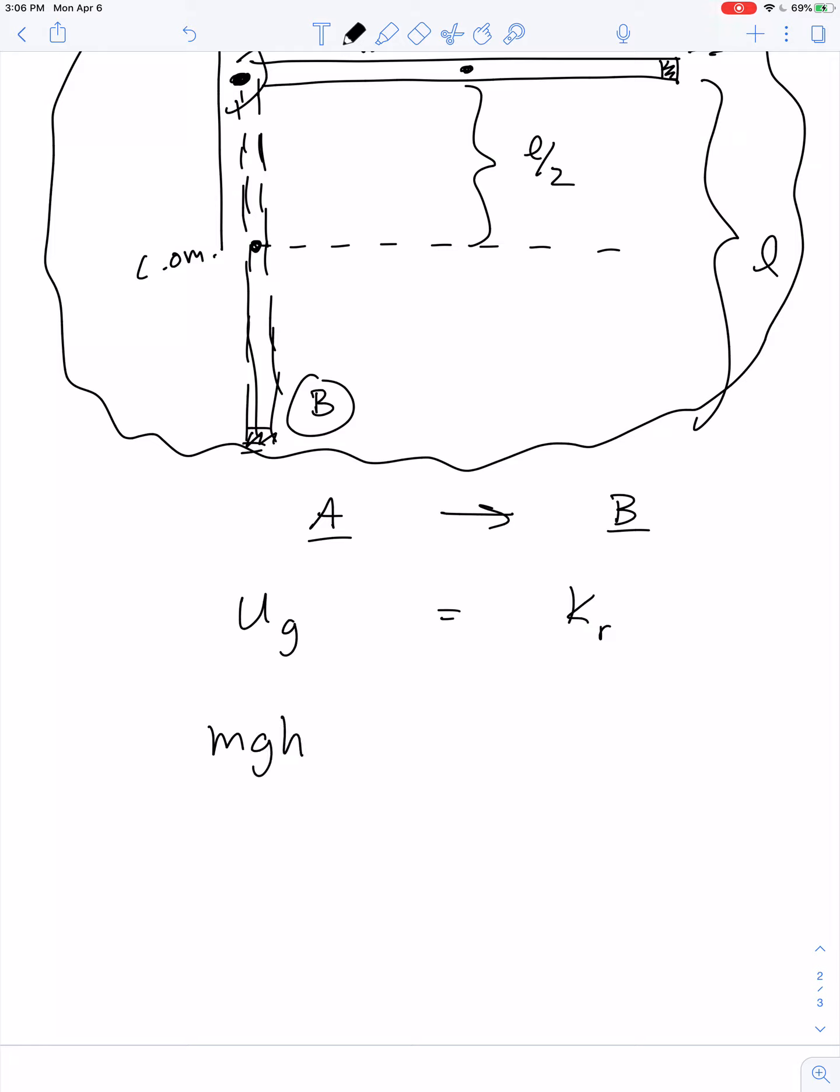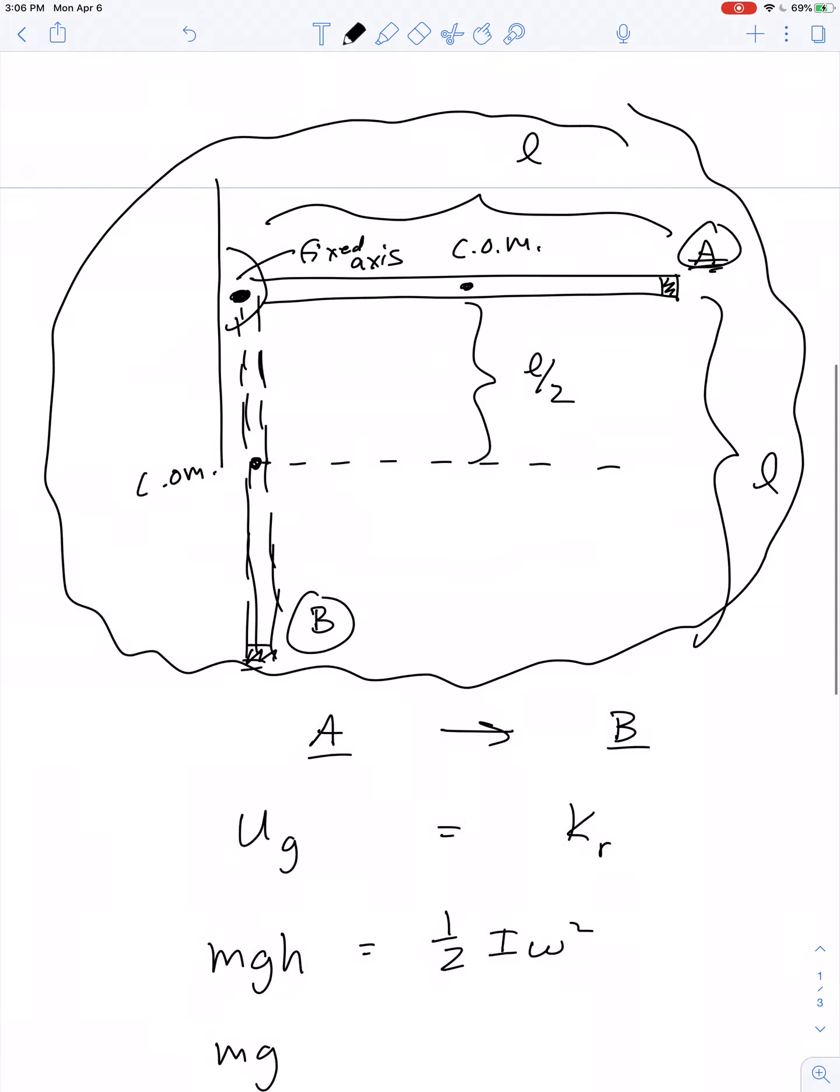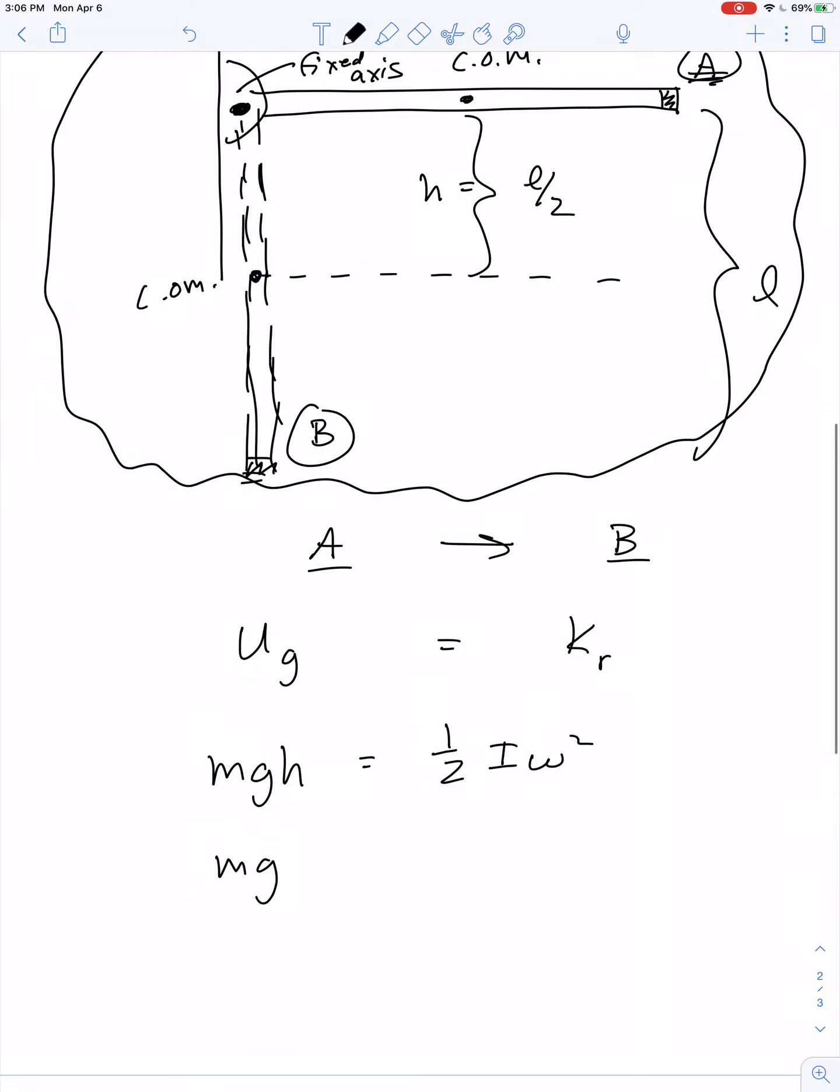So mgh is equal to 1 half i omega squared. Or mg times L over 2 equals 1 half times 1 third ml squared. That's the rotational inertia of a rod when it's rotated about its end times omega squared.